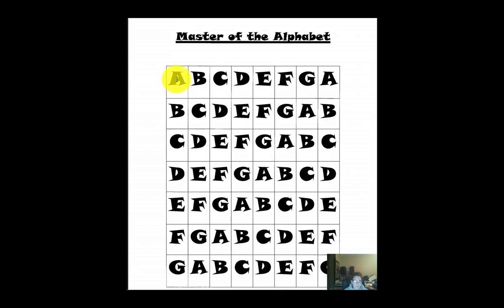Down, up, down, up, master of the alphabet. A, B, C, D, E, F, G, A, G, F, E, D, C, D, A. Okay.